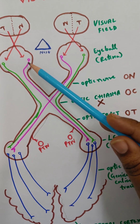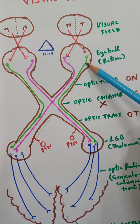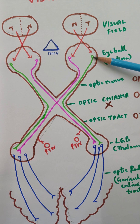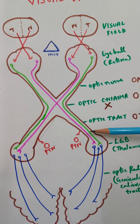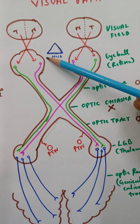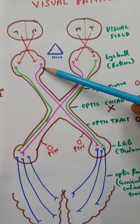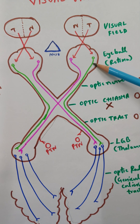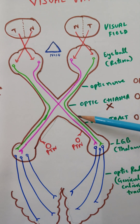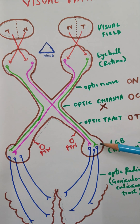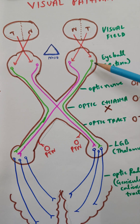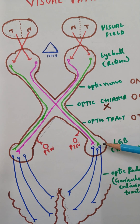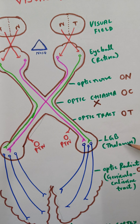After the optic chiasma, the pathway continues as the optic tract. The optic tract contains ipsilateral temporal fibers — fibers coming from the same side — and contralateral nasal retinal fibers from the opposite eye. The optic tract ends in the lateral geniculate body. So the ganglion cell, which started in the retina as the second-order neuron, ends and relays in the lateral geniculate body.